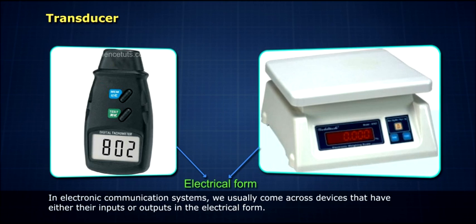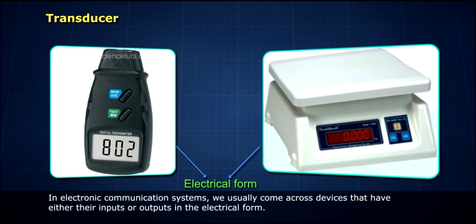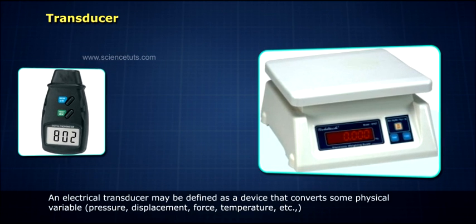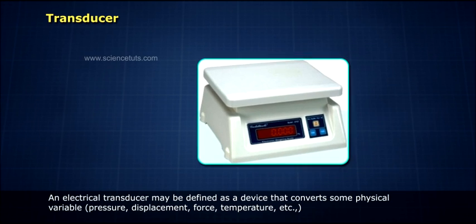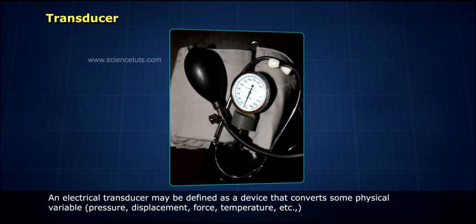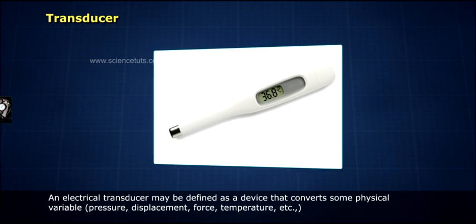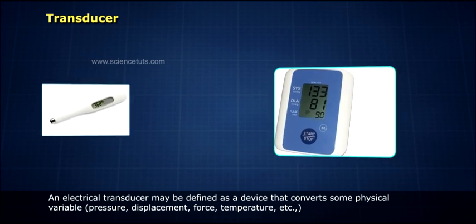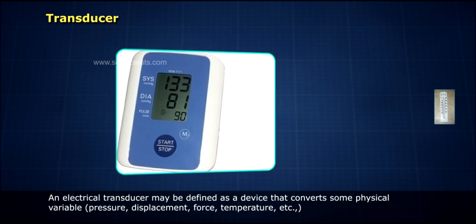we usually come across devices that have either their inputs or outputs in the electrical form. An electrical transducer may be defined as a device that converts some physical variables—pressure, displacement, force, temperature, etc.—into corresponding variations in the electrical signal at its output.